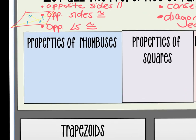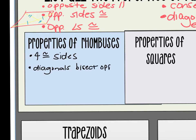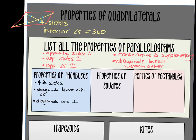Properties of a rhombus: four congruent sides (and it's a parallelogram with four congruent sides by definition), diagonals bisect opposite angles, and diagonals are perpendicular. Plus all the parallelogram properties trickle down — opposite sides parallel, opposite sides congruent, opposite angles congruent, consecutive angles supplementary, and diagonals bisect each other. So a rhombus has all of that plus the four congruent sides, diagonals bisect opposite angles, and diagonals are perpendicular.